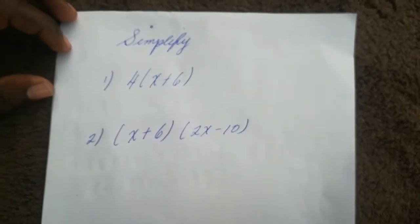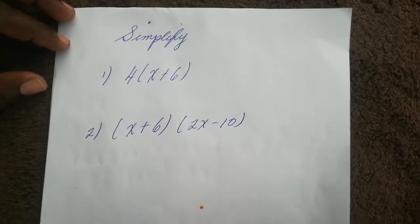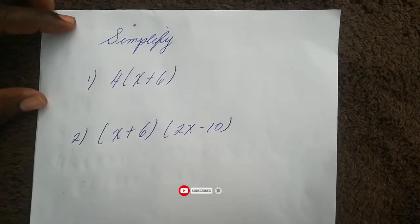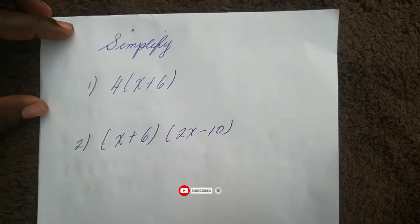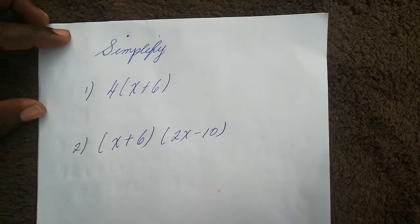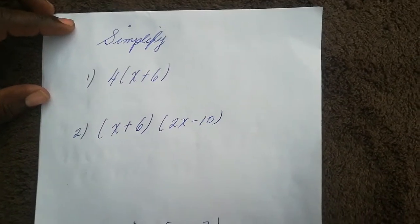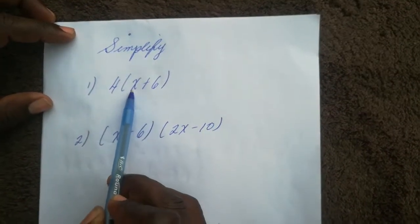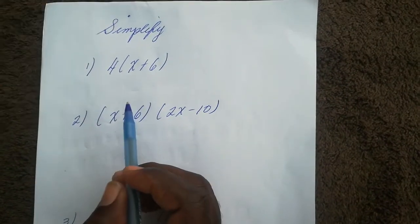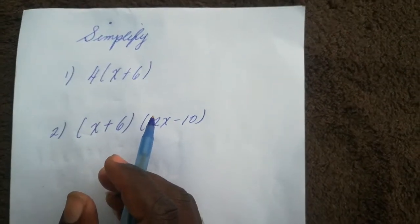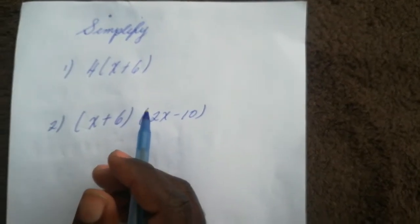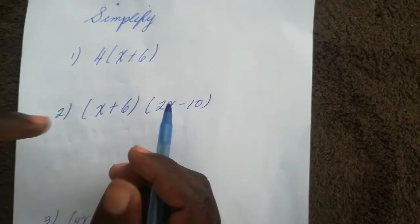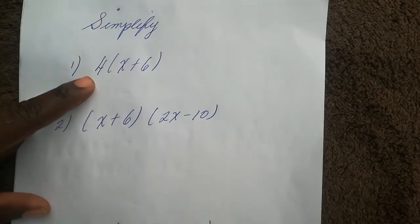Today it's all about simplification using the distributive law. The distributive law is what we use to remove brackets in math. We're going to take what's on the outside, multiply by each element on the inside, and then apply the regular rules of simplification — grouping like terms together and then operating them.